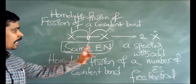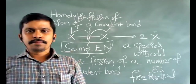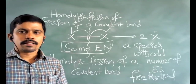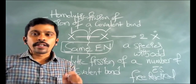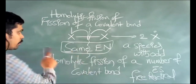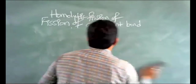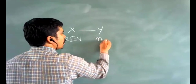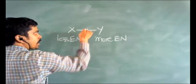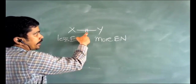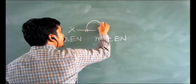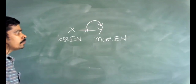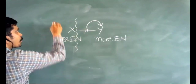Which type of atoms are required for homolytic fission? Same electronegative atoms are required. Now another example: X bonded with Y, where X has less electronegativity and Y has more electronegativity. The two electrons in the bond are completely shifted or migrated towards the more electronegative atom Y, and the bond is broken.